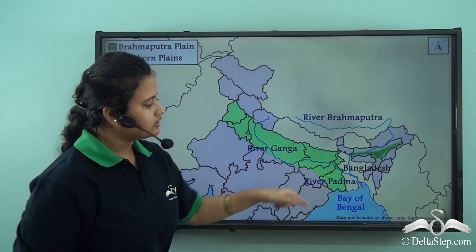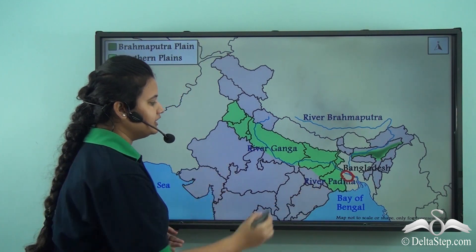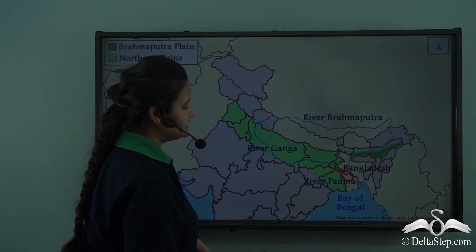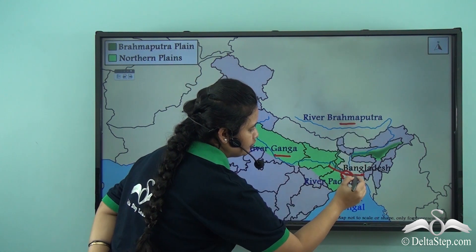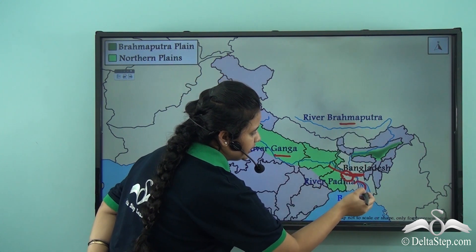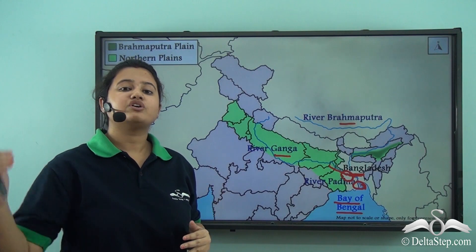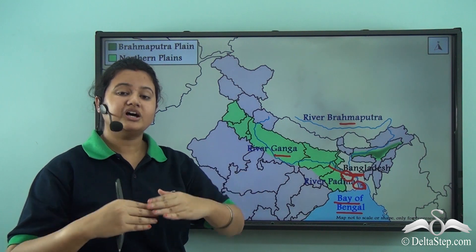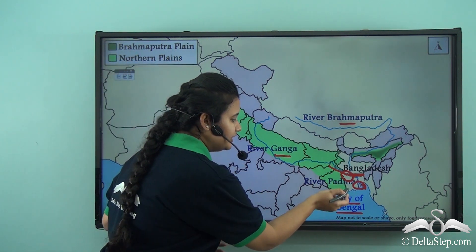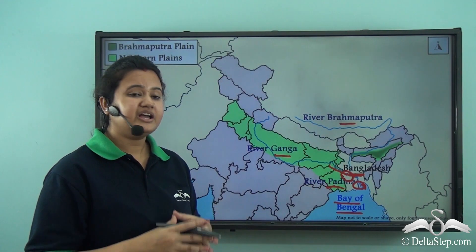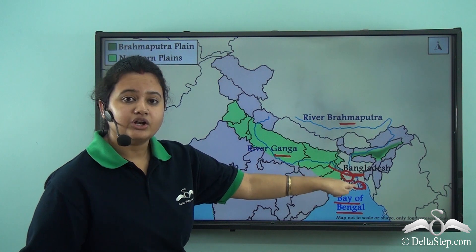At the lower course of River Brahmaputra, River Ganga joins it — that is, River Ganga joins Brahmaputra in the country of Bangladesh before flowing into the Bay of Bengal. At the confluence of River Ganga and River Brahmaputra, a new river is formed, and the name of that river is River Padma. River Padma is formed when Ganga joins Brahmaputra at its lower course.